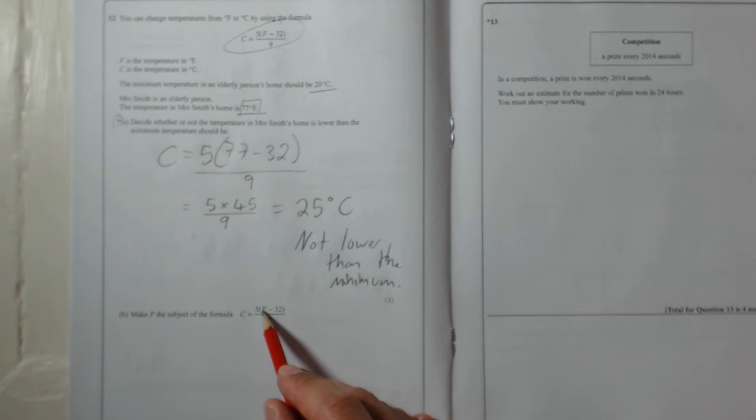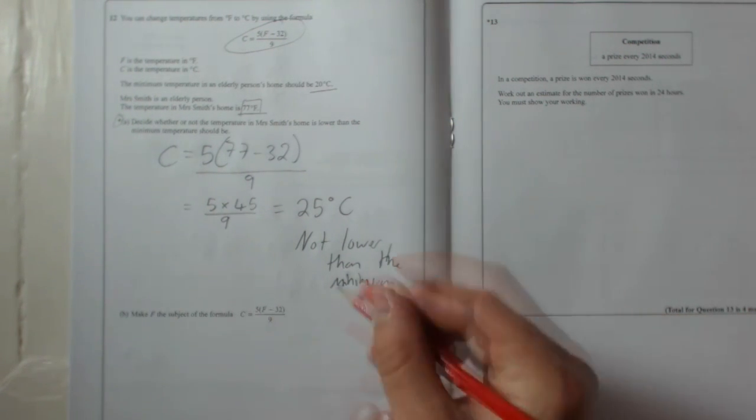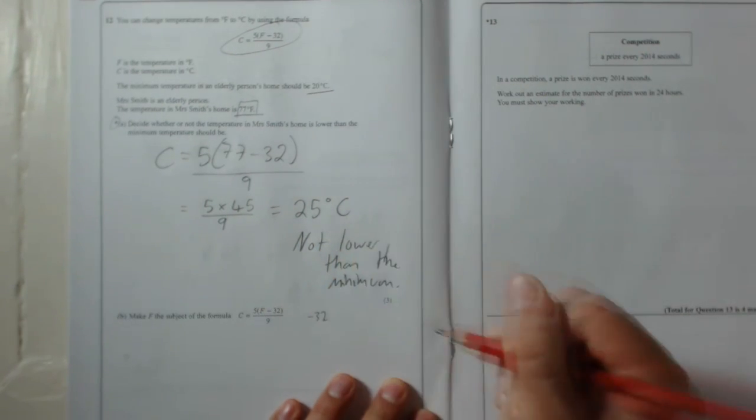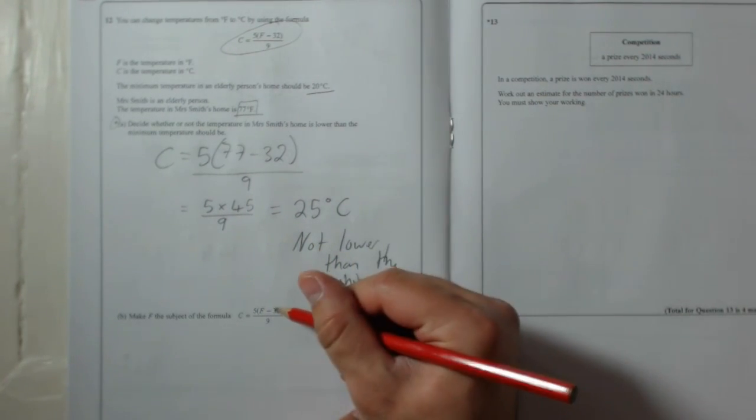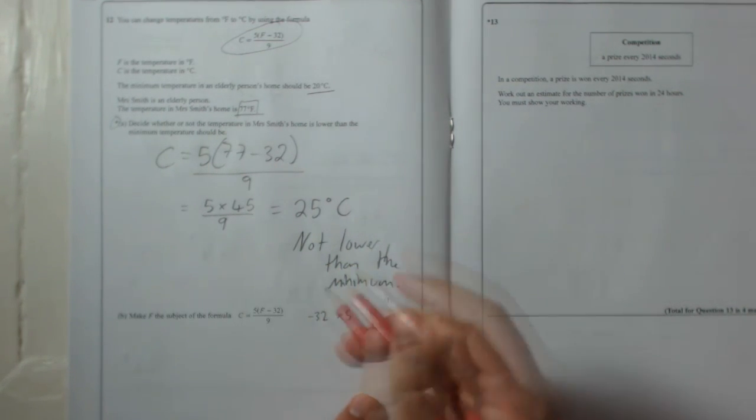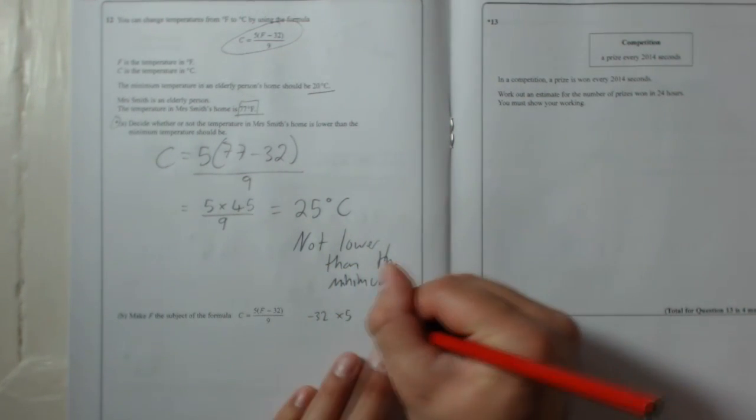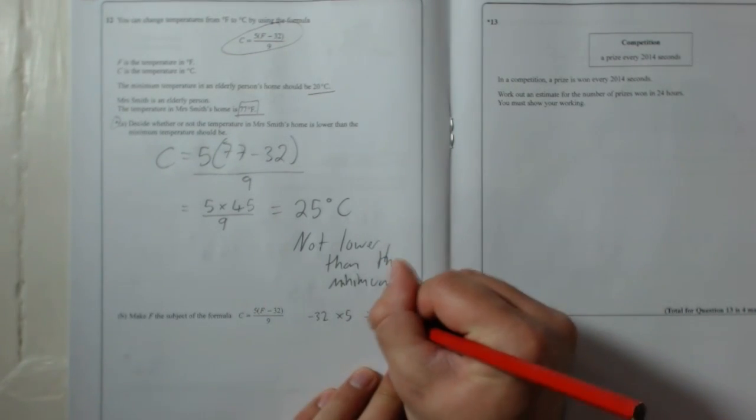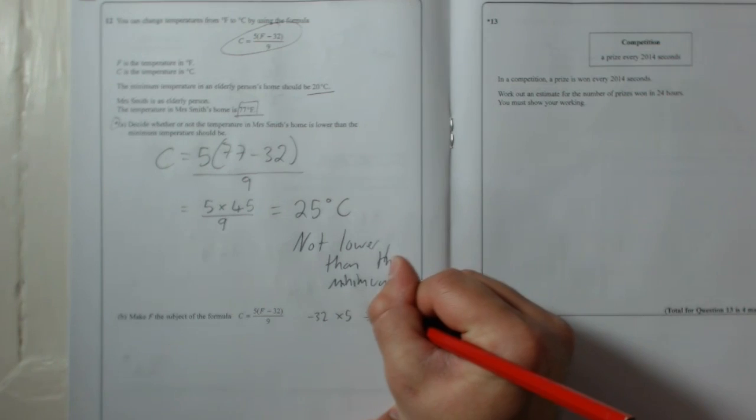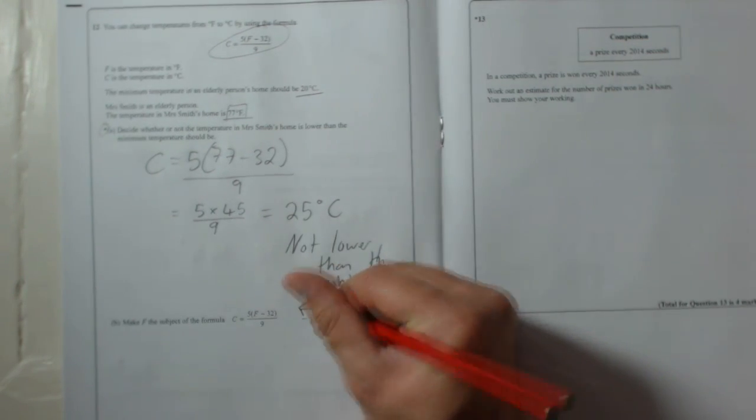That F is, let's just think about what's happened to it first. It's had 32 taken away from it. So I'll write that down. Then it was times by 5. Then it was all divided by 9. So what we want to do is we want to undo that by going backwards.